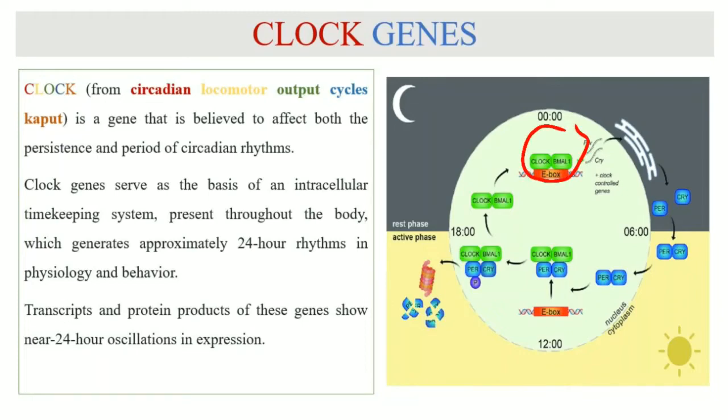In the nucleus or DNA, this CLOCK-BMAL1 complex binds with the DNA and induces the transcription of PER and CRY genes. This results in the formation of PER and CRY messenger RNA.